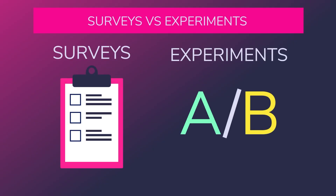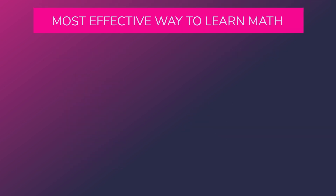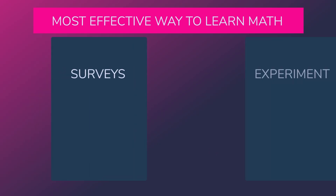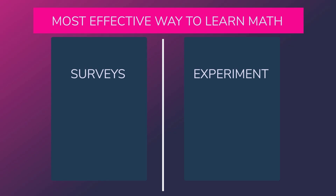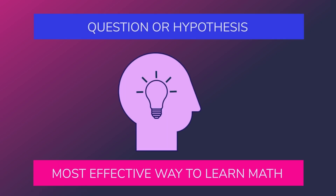How do you know which data collection method works best? Let's try a quick challenge. Imagine you want to find out the most effective way to learn math — by watching videos or reading books. Would you use a survey or an experiment? If you chose a survey, you could ask people what they prefer and why. If you chose an experiment, you could have one group learn by watching videos and another by reading books, then test their understanding afterward. Both methods give you valuable information, but the one you choose depends on your question or hypothesis.